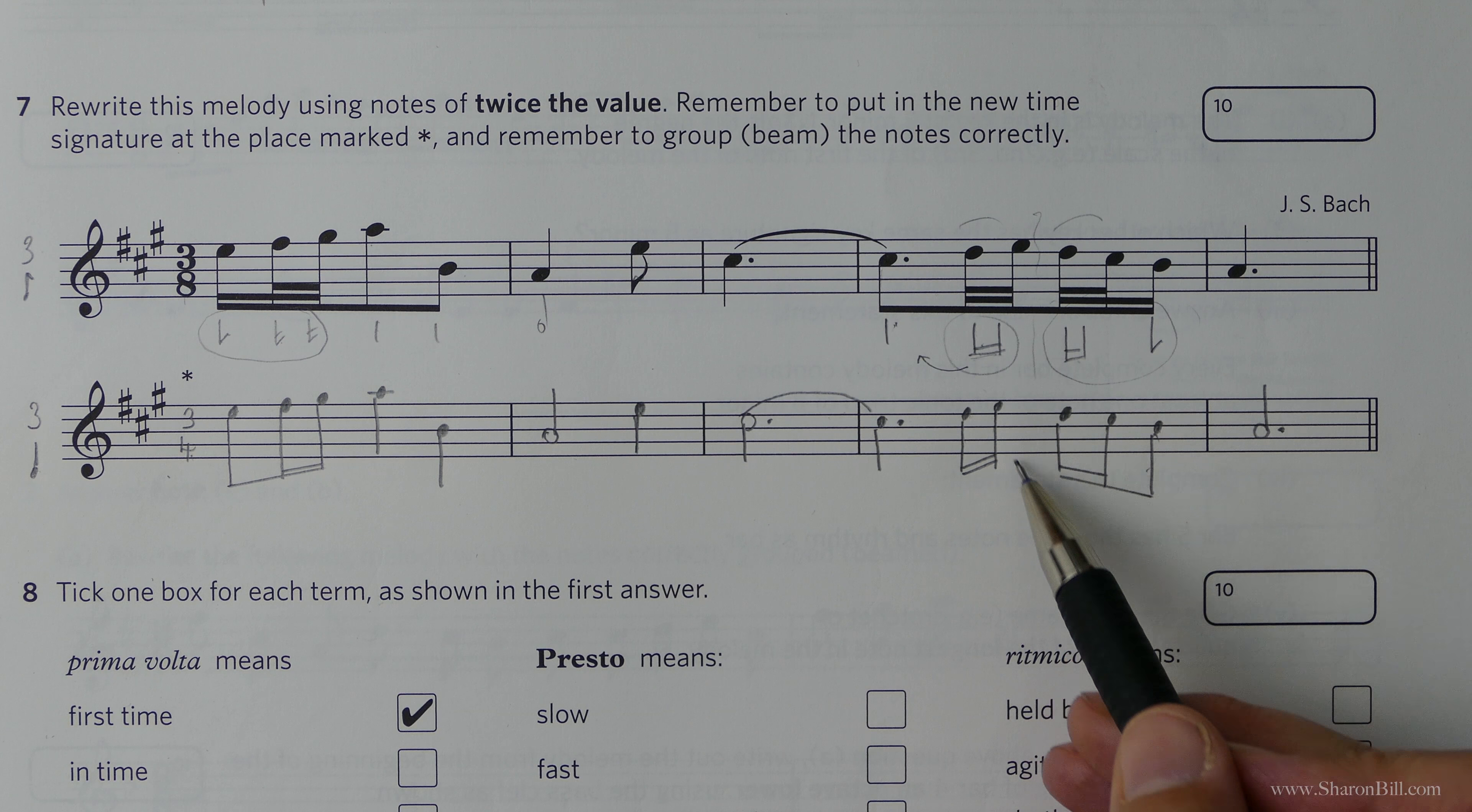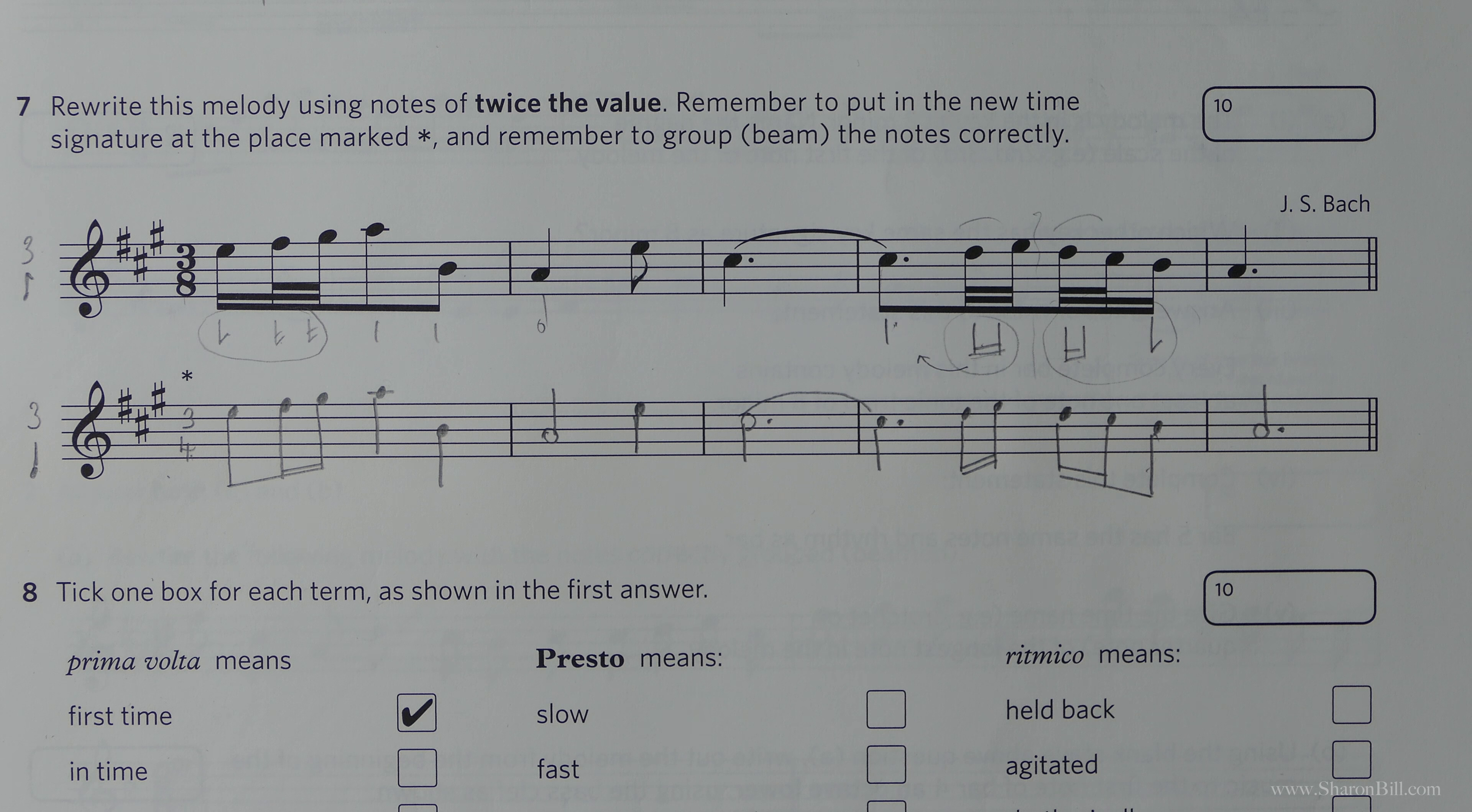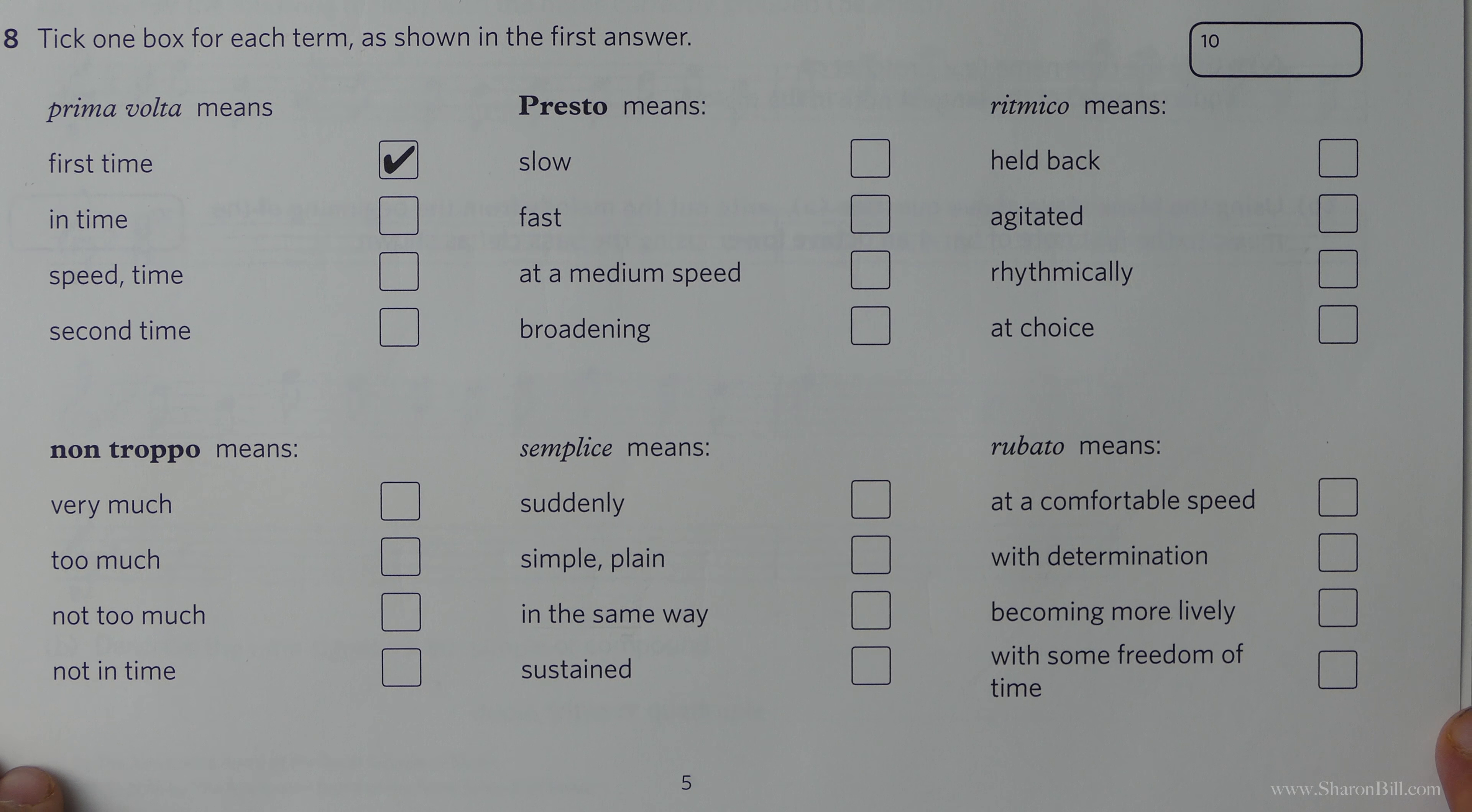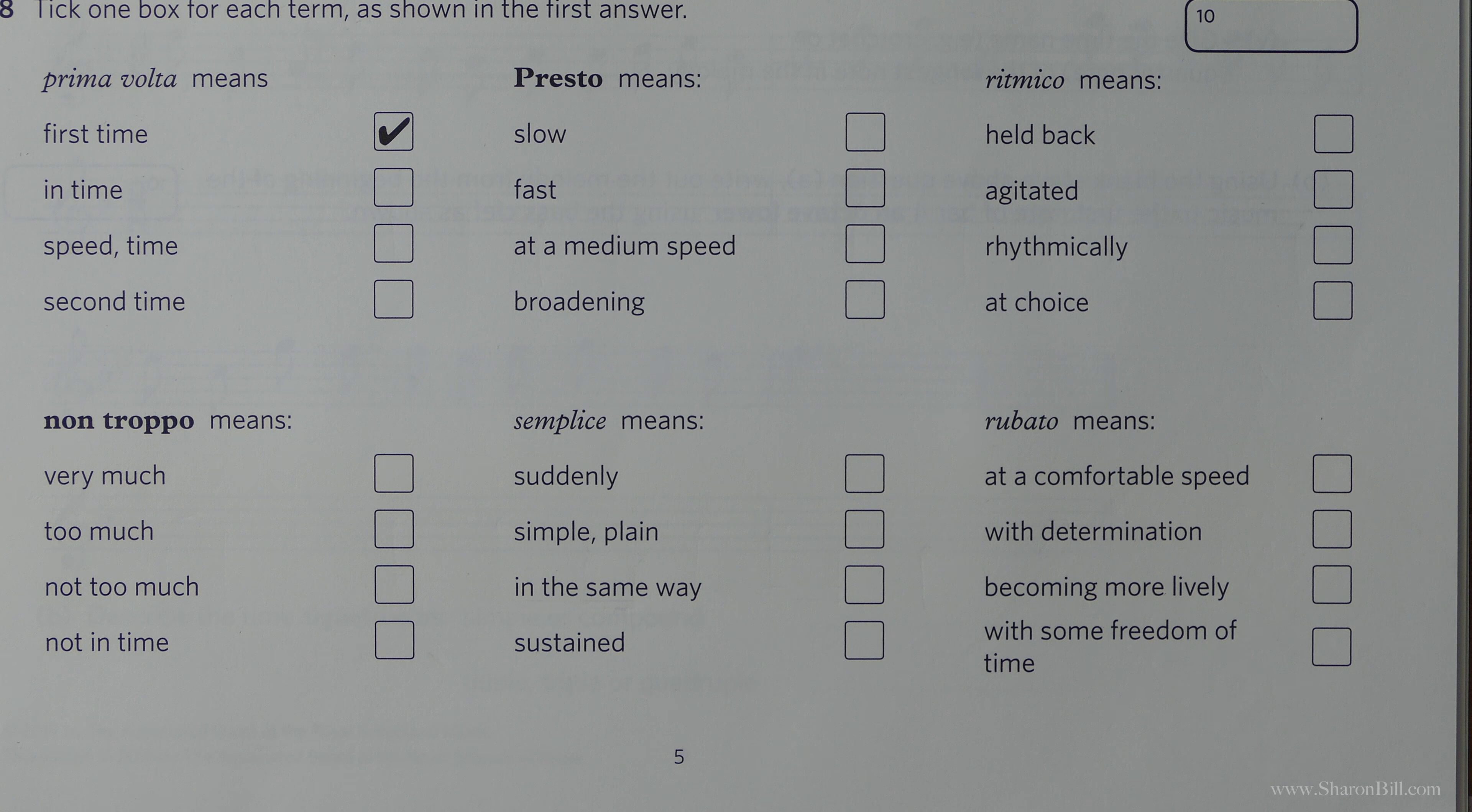That completes that question. It's really important that you just take care here with this beaming. Let's move on to the next question. Question eight asks to tick the box for each term. So these are our Italian terms and performance directions. Bear in mind, this is all of grade one, all of grade two, and now all of grade three.